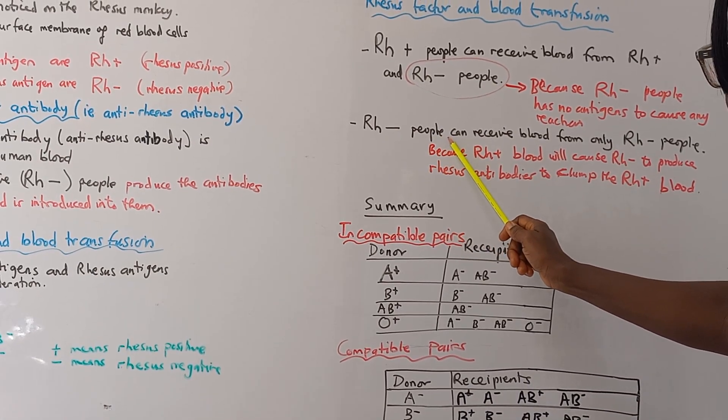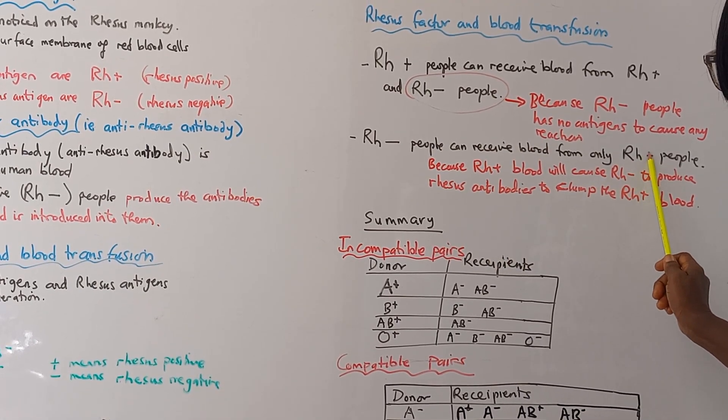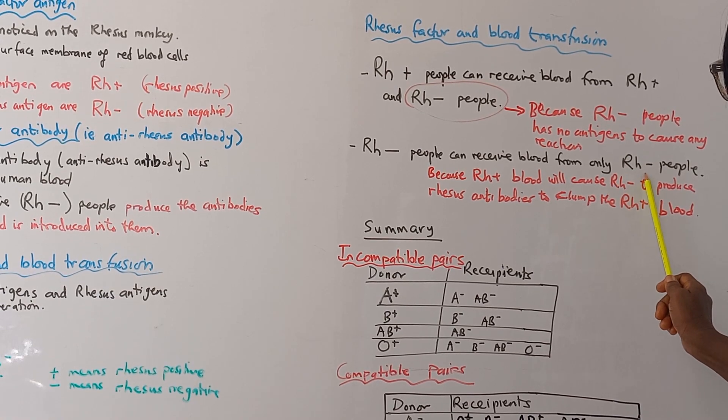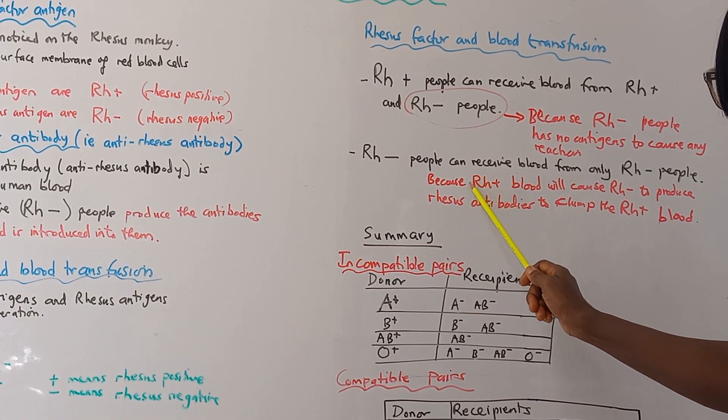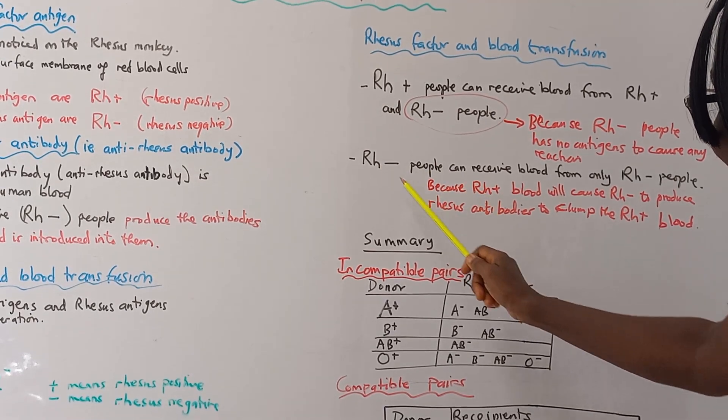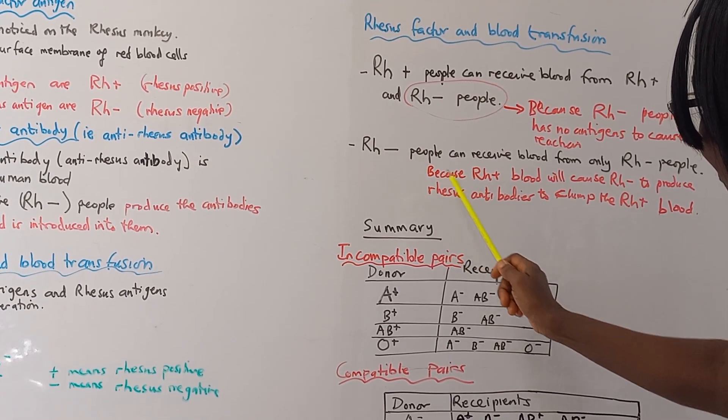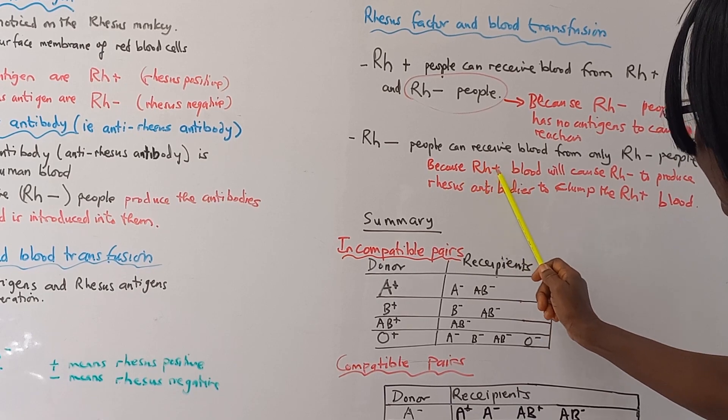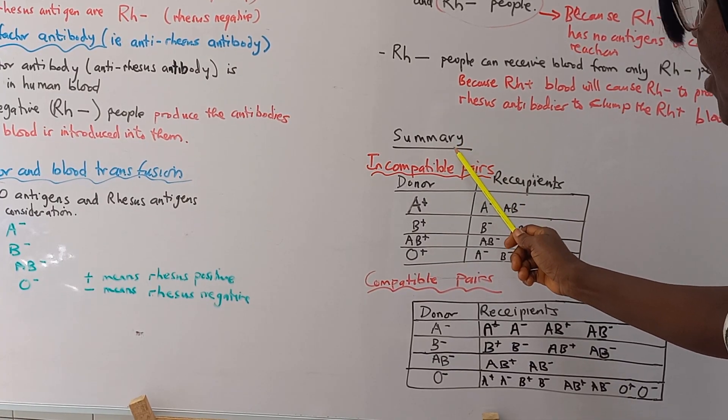But Rhesus negative people can receive blood from only Rhesus negative people. If blood from Rhesus positive people gets into the Rhesus negative people, the Rhesus negative people will make antibodies to react to the Rhesus positive blood.